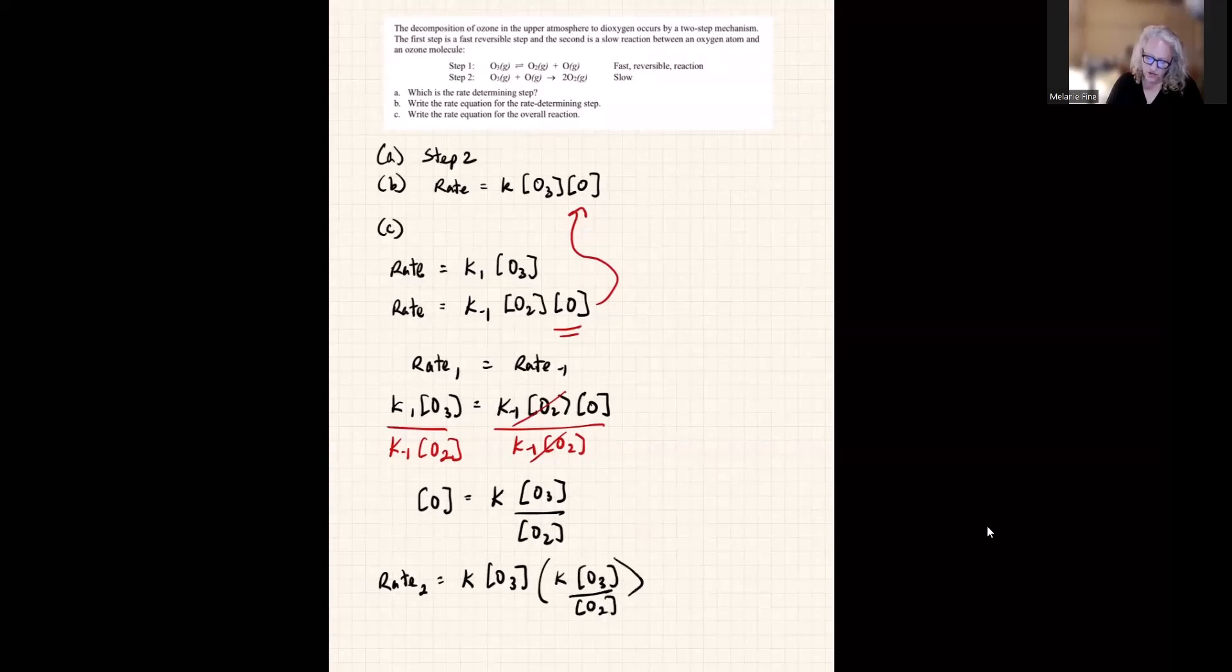Now, these are two different Ks, and instead of calling it K squared, they multiply together, they form a new K. So the rate of the entire reaction, we're going to call it K. Notice that O3 is now squared, and O2 is in the denominator, so we could write that as O2 to the negative 1. And this, then, would be the rate equation for the overall reaction.